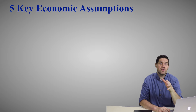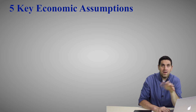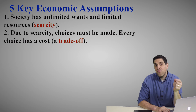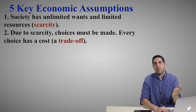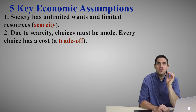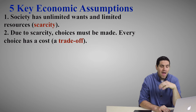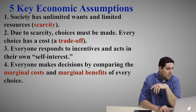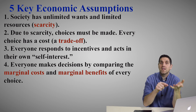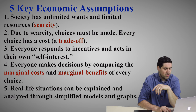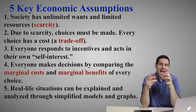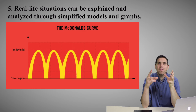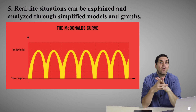There are five key economic assumptions. First, all resources are scarce — we have unlimited wants and limited resources, and because of that we're forced to make choices. Second, everything has a cost — there's no such thing as a free lunch. Third, everyone responds to incentives and acts in their own self-interest. Fourth, everyone makes decisions by looking at the additional benefit and additional cost. And fifth, life can be explained, kind of, with graphs — you can use graphs to explain the economy. You're going to see a lot of graphs in this class.